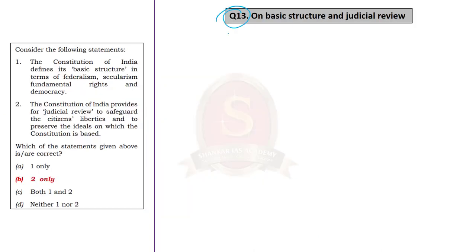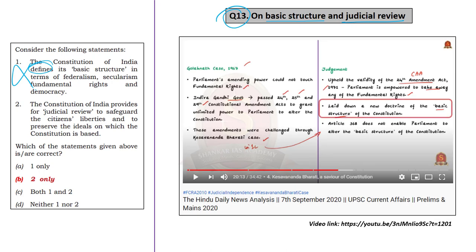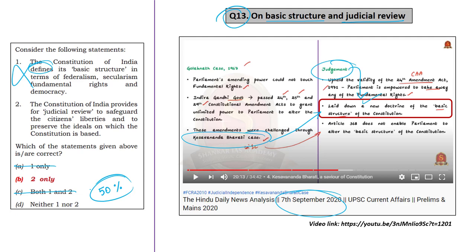The 13th question is with reference to basic structure and judicial review. The first statement mentions that the Constitution of India defines its basic structure. This statement is incorrect, as we know the doctrine of basic structure is laid down by the Supreme Court through several judgments. The doctrine was laid down in the case law of Kesavananda Bharati versus State of Kerala — it was not laid down by the Indian Constitution. We discussed all these details on 7th September 2020 in the News Analysis. So we can easily say Statement 1 is incorrect, eliminate options A and C, and increase our probability of arriving at the correct answer from 25% to 50%.